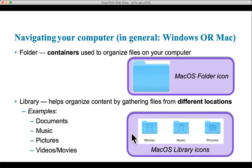This is what the movie library looks like on a Mac. The Mac also has libraries for music and for pictures. Documents is another example of a library. We'll show you where to access these libraries in the file management system on your PC, whether that's Windows or Mac. The bottom line is that libraries are dynamically populated.